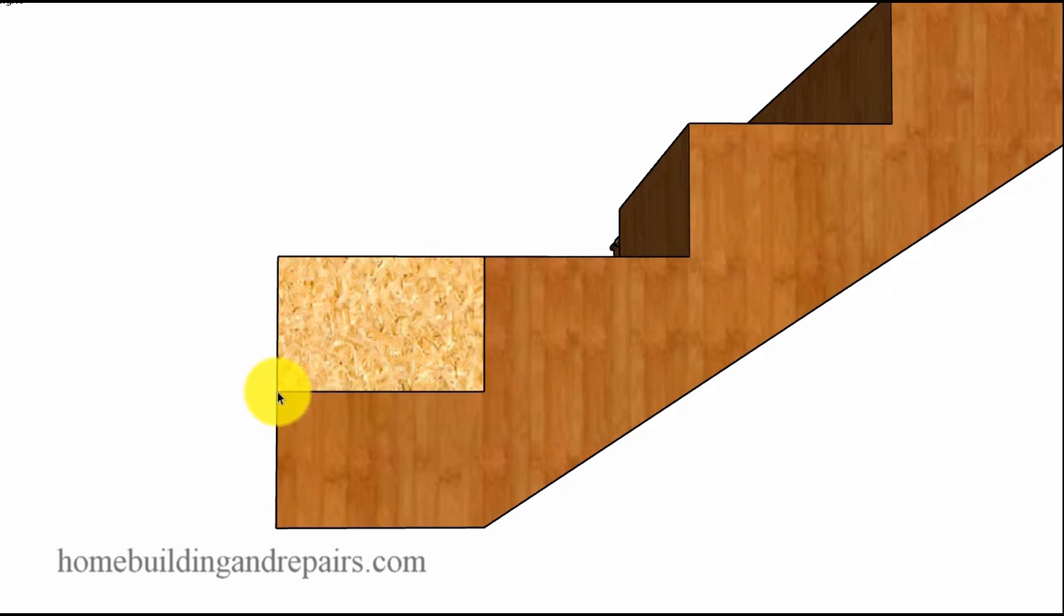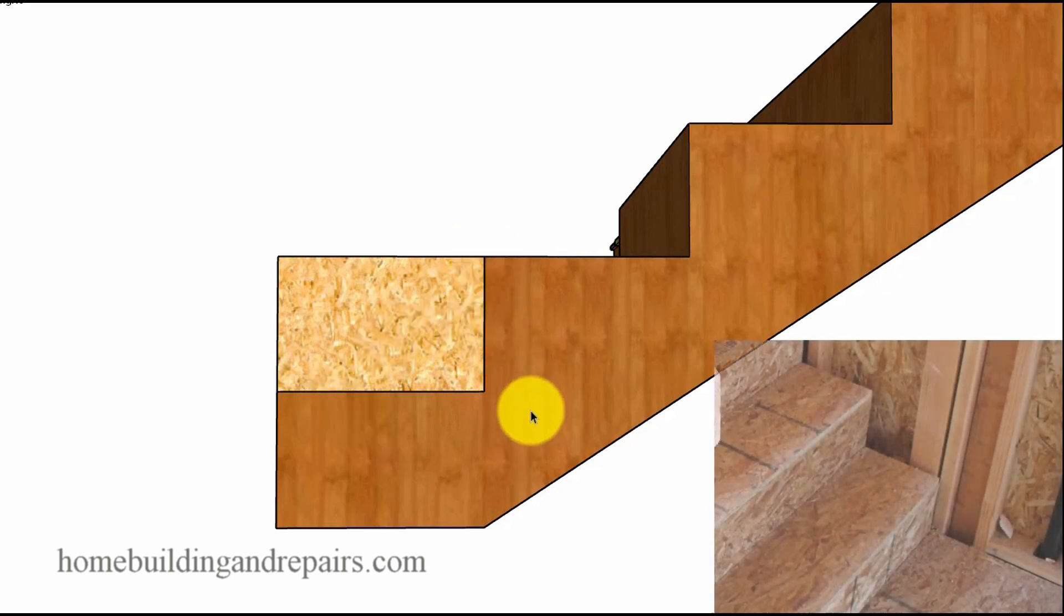The minimum building code for the tread depth is 11 inches and the minimum rise, I believe, is 7 inches. I just created a block of wood here to make everything simple. You can always check your stuff with a block of wood or a framing square. This is just a block of wood, 11 inches by 7 inches. This right here would be acceptable by most building departments for a public stairway.